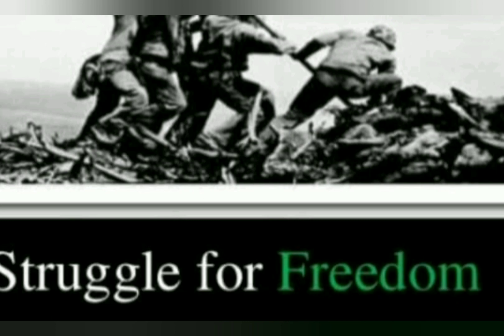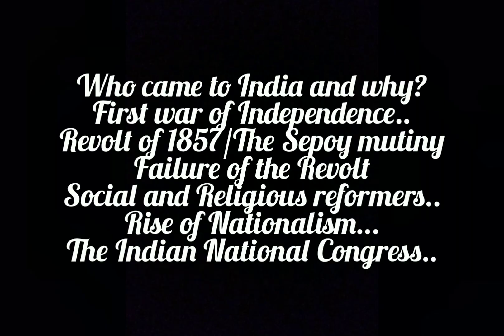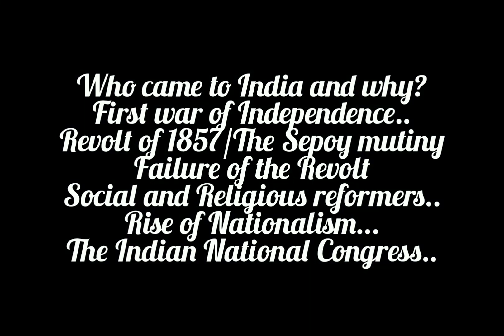In this chapter we will cover: who came to India and why, how the farmers became poor, what was the First War of Independence — the Revolt of 1857, also known as the Sepoy Mutiny — what happened after 1857, the factors responsible for the failure of this revolt, social and religious reformers, and the rise of nationalism and formation of the Indian National Congress.